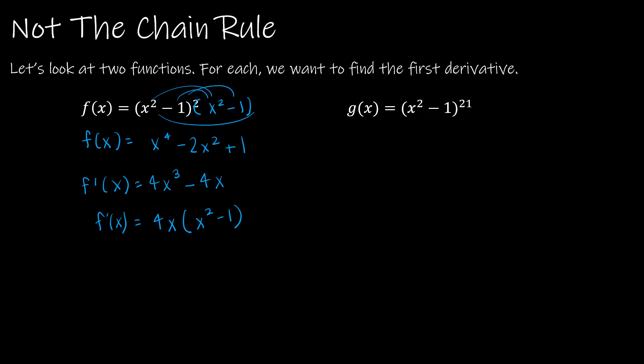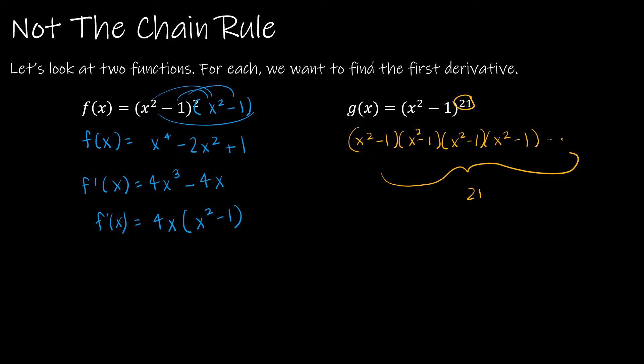For the second question, notice this is to the 21st power. Without knowing the chain rule, we would have to multiply (x²-1) by itself 21 times, which would take a really long time, and then take the derivative of that result. So let's talk about the chain rule, because it can save us from having to do that.